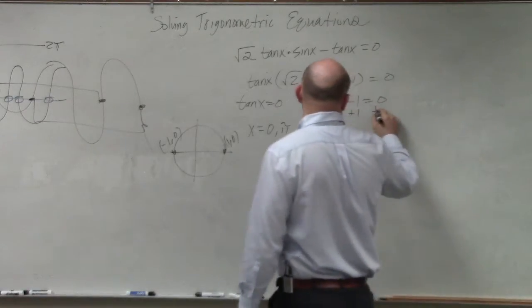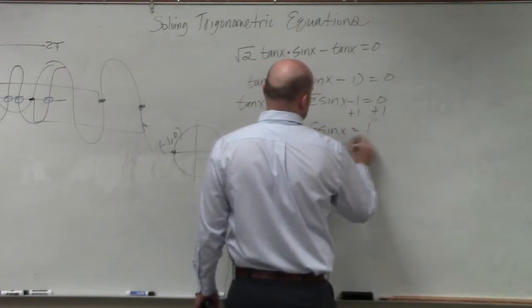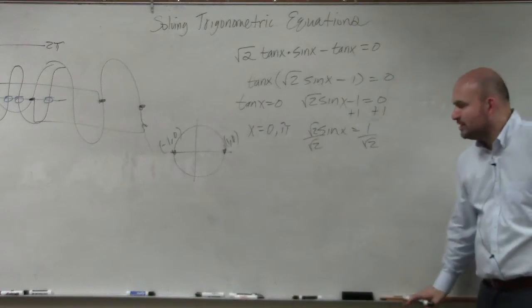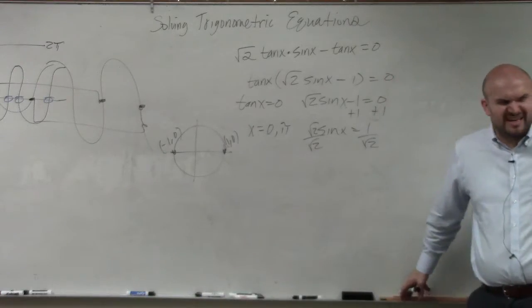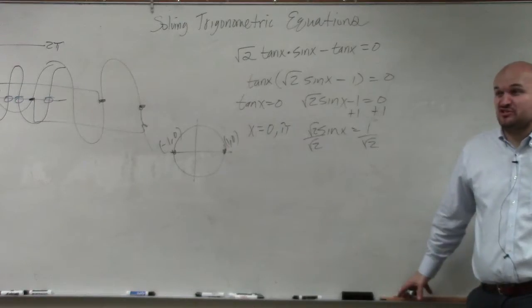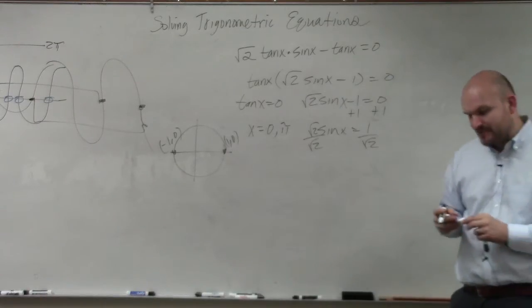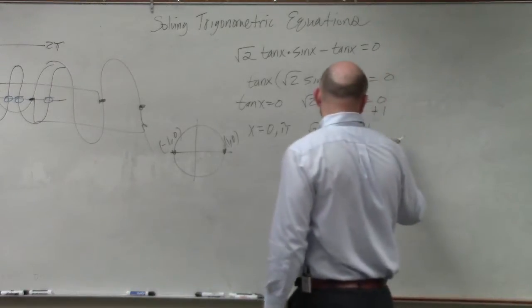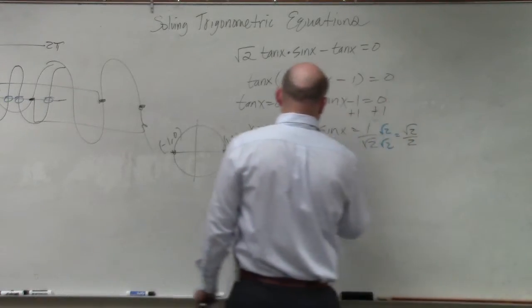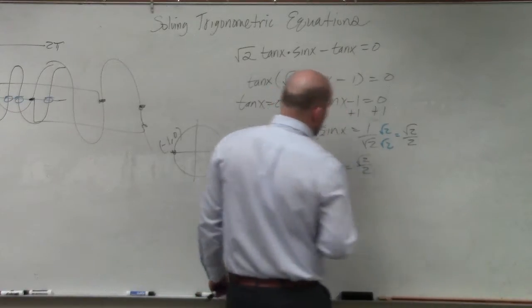Over here, we're going to add 1. So we have sine of x equals 1 divided by square root of 2. Do we have anything with square root of 2? Well, we do, but it's square root of 2 over 2. That's not the same thing, though. But if we remember, we can rationalize the denominator.